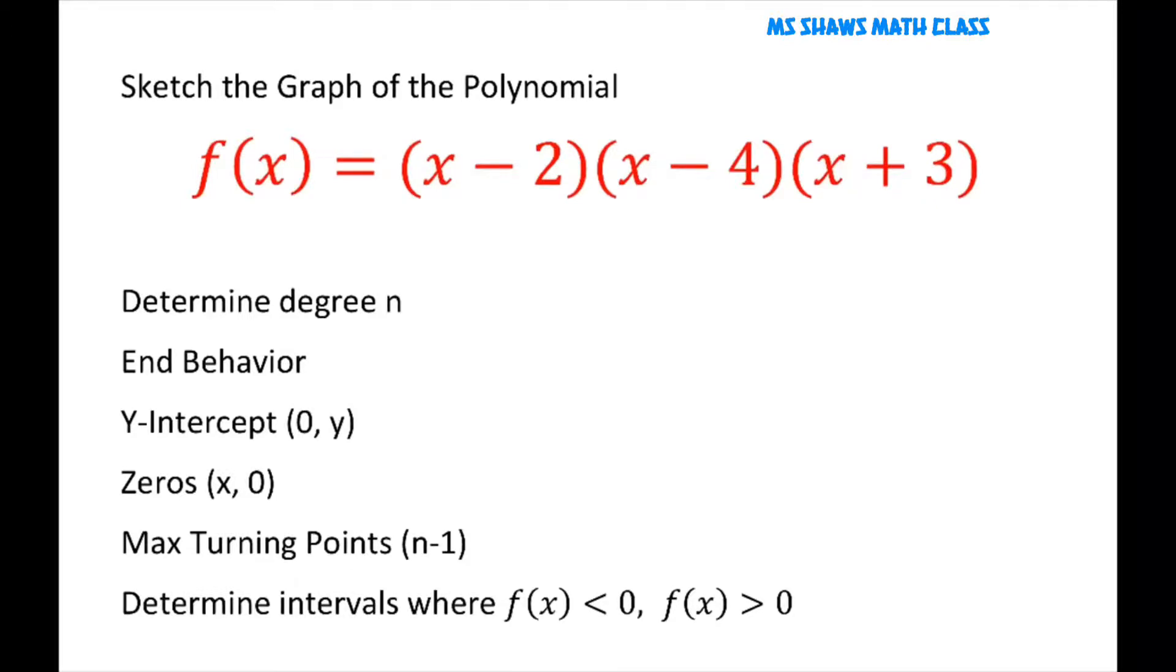So let's fill out some information. When we're determining the degree, and this is not in standard form, all we're going to do is add up the multiplicities here so that we have 1, 2, 3. So the degree equals 3.